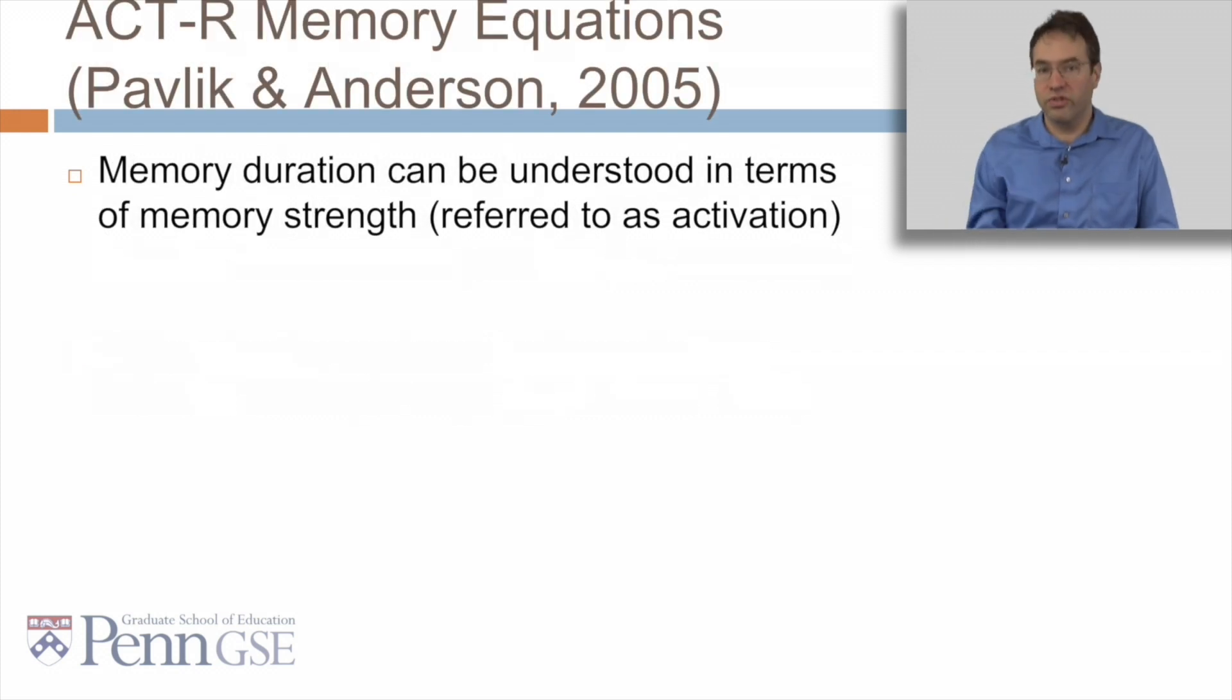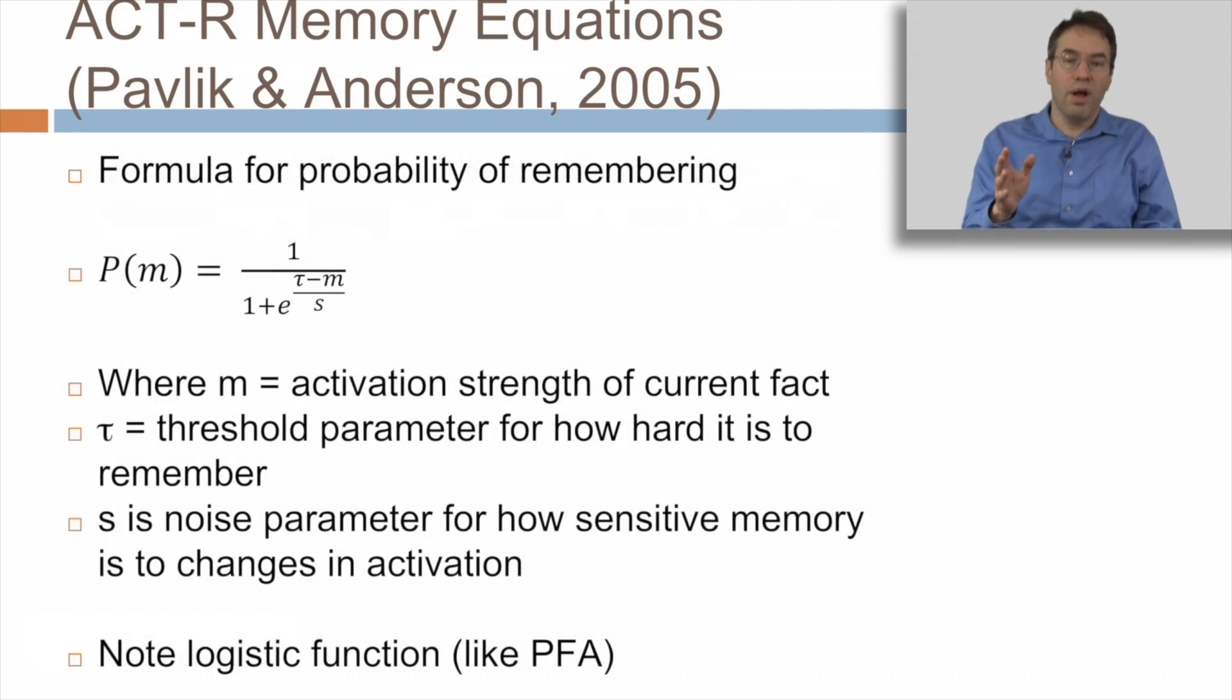We start our discussion of algorithms for modeling memory with the ACT-R memory equations. It didn't actually start here. There were people working on this problem prior to this, but we'll start here just for the sake of not going back to Ebbinghaus in the 19-whatever-30s. In Pavlik and Anderson's ACT-R memory equations, memory duration can be understood in terms of memory strength, which is sometimes referred to as activation. The formula for the probability of remembering in ACT-R is based on three parameters.